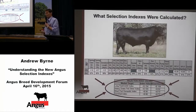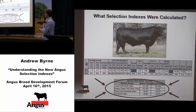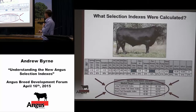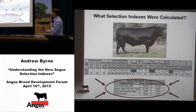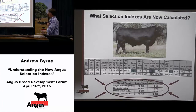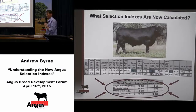Moving to the new indexes: our starting point this time last year was four different indexes being calculated within Angus Breed Plan — our long-fed CAAB index, our heavy grass-fed steer, our short-fed domestic, and our terminal index. Now, when we look at animals, we have four completely new indexes: the Angus Breeding Index, the Domestic Index, the heavy grain, and the heavy grass index. Most of you would be familiar with those, having already received them on your animals.